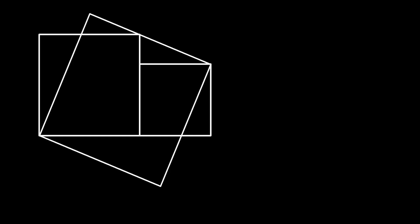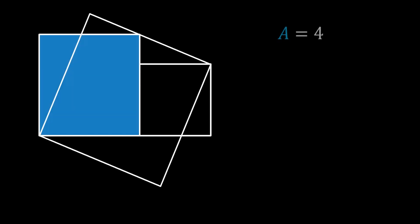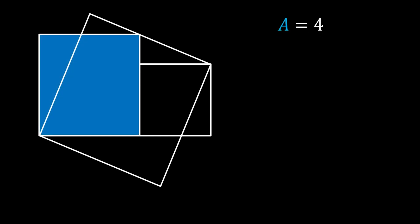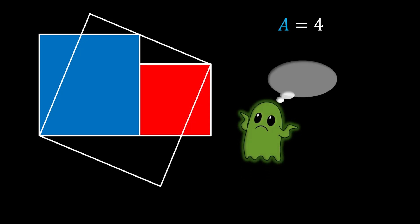If we know for certain that the area of the bigger blue square is equal to 4, can we somehow calculate the area of the smaller red square? As I mentioned, this problem was presented to me by one of my subscribers, Herbie, so thank you Herbie for this nice challenge.